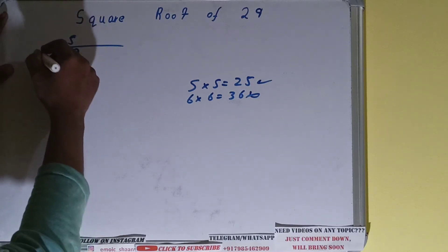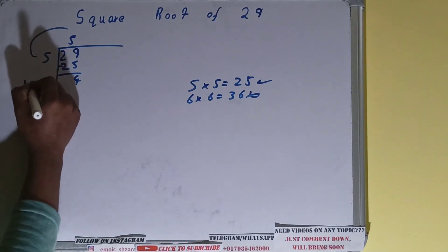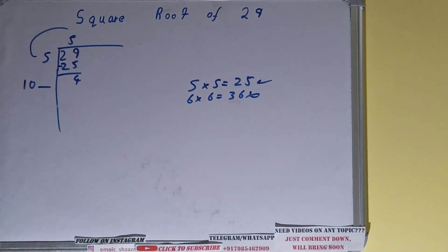The next thing you need to do is add the divisor with the number you multiplied with. So 5 plus 5 is 10. Keep it in 10 space with one digit extra.